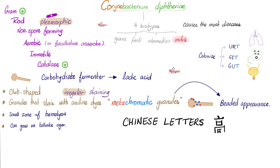Coryne means club. When you stain the granules with aniline dye, they appear as metachromatic. You can use aniline dye or methylene blue. The granules appear on the club, giving it the classic beaded shape. The clubs are arranged together resembling Chinese letters. Corynebacterium diphtheriae produces a small zone of hemolysis and it can grow on tellurite agar.